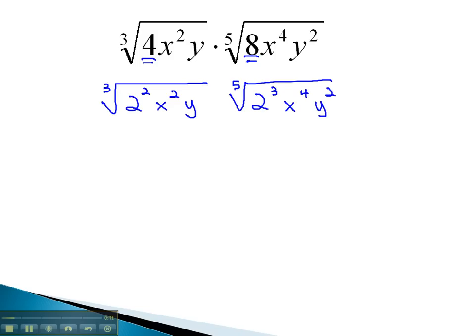Now that the whole problem has exponents, we can use our exponent properties to simplify this expression. Looking at our index, 3 and 5, the common index is going to be 15. We get that 15 by multiplying the 3 by 5, and the 5 by 3.